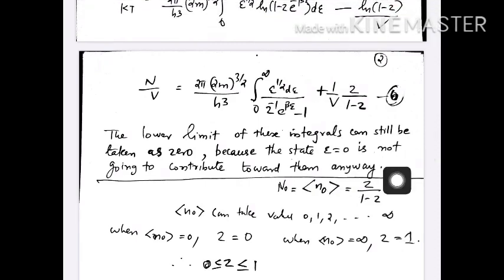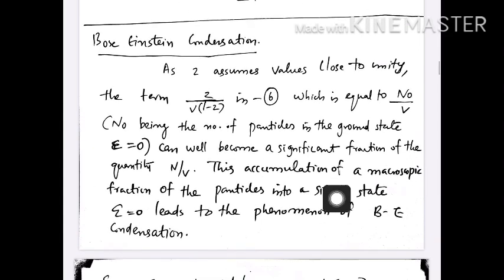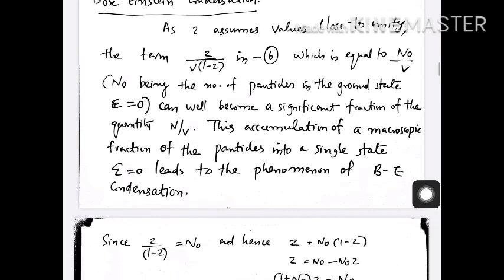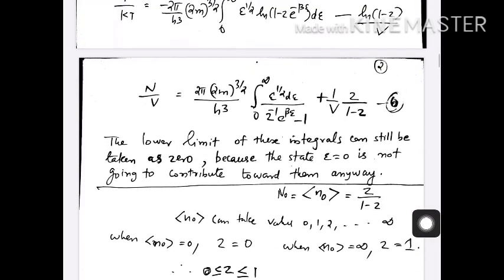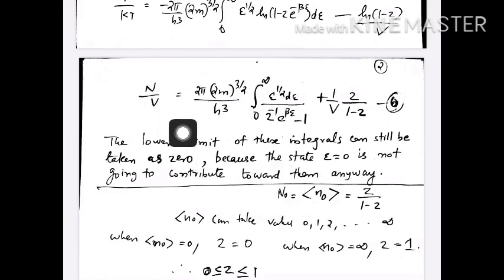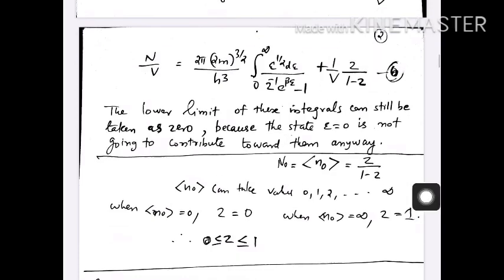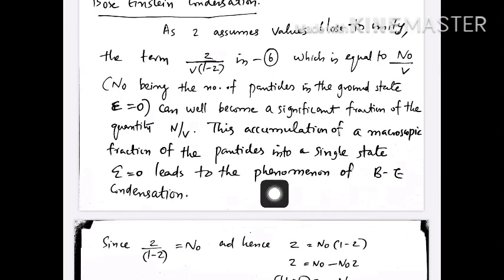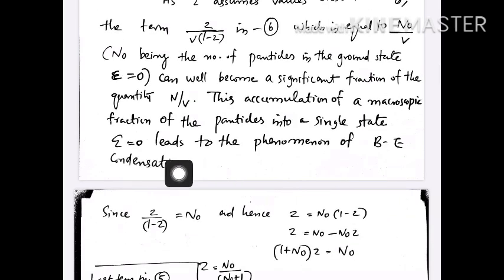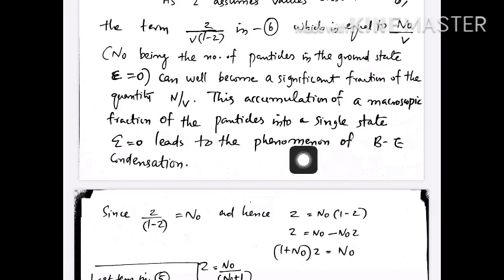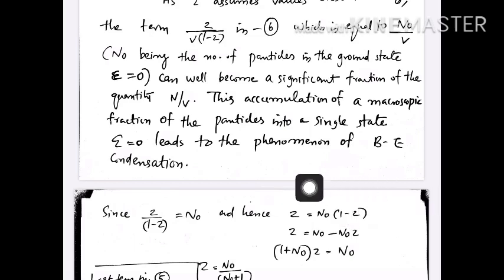What this means is that the number of particles in the ground state — the epsilon equal to 0 state — can become a significant fraction of N/V, because this term is going to infinity. So a large, macroscopic fraction of particles will accumulate in the single particle state of energy epsilon equal to 0. This accumulation or crowding of particles in the ground state leads to the phenomenon of Bose-Einstein condensation.